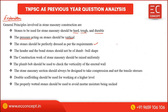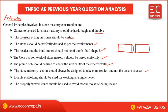The header and bond stones should not be of dumbbell shape. Construction work of stone masonry should be raised uniformly. A plumb line or spirit level should be used to check the verticality of the erected wall. Stone masonry should always be designed to take compression and not tensile stress.